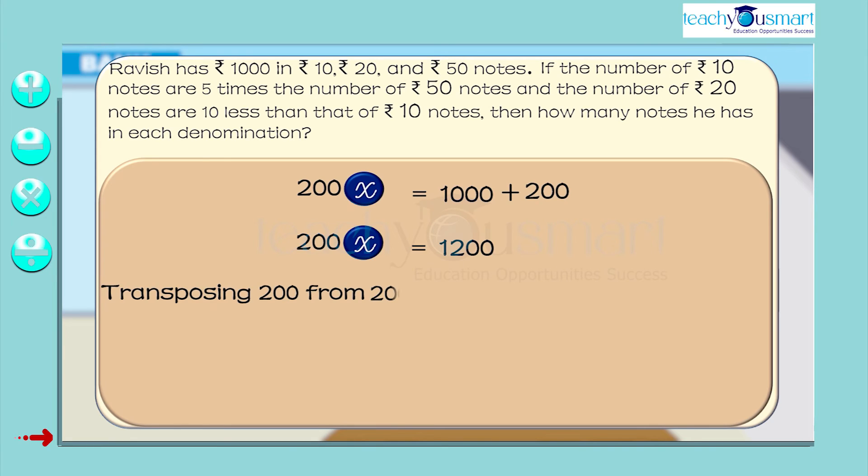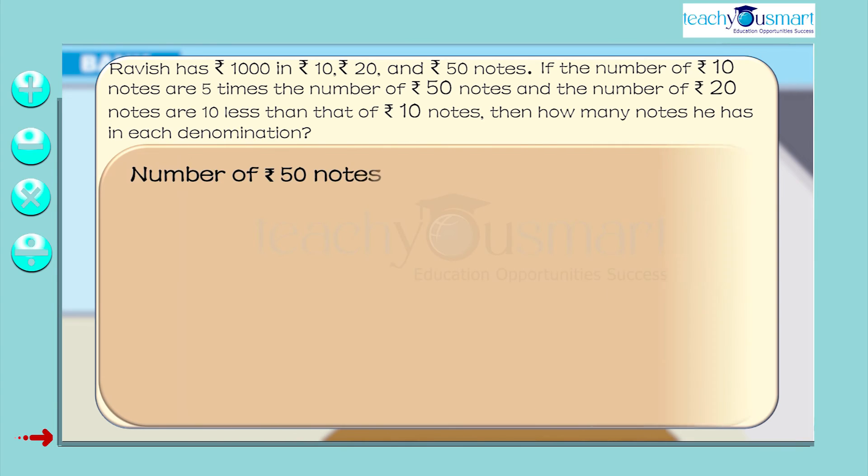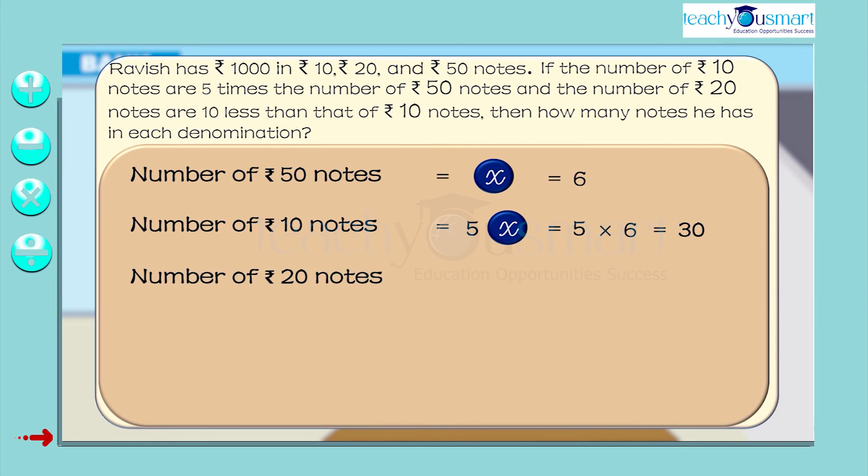Transposing 200 from 200x to RHS and dividing by 200. Therefore, x equals 1200 divided by 200 equals 6. So the number of 50 rupee notes is x equals 6. The number of 10 rupee notes is 5x equals 5 multiplied by 6 equals 30. The number of 20 rupee notes is 5x minus 10 equals 5 multiplied by 6 minus 10 equals 30 minus 10 equals 20.